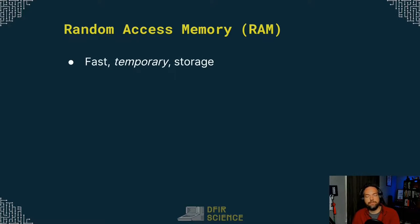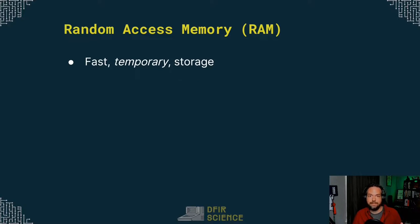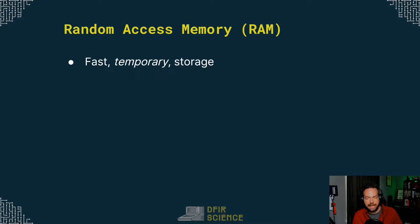Random access memory is fast temporary storage. It's faster than your hard drive. Things we want to store long term, like files, we put on our hard drive, but a hard drive is relatively slow. It can be very large, so we can fit a lot of things on it, but hard drive access is quite slow. The processor actually needs to get data faster than what a hard drive is capable of. So instead we have a small, much faster temporary storage location where we can load programs and data — that way the processor can access that data quicker, and that's essentially what RAM is.